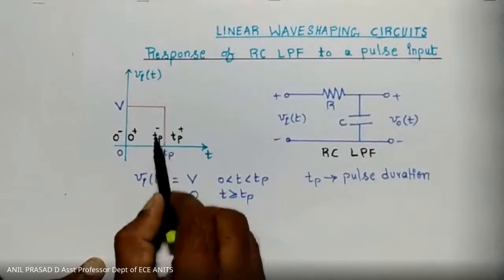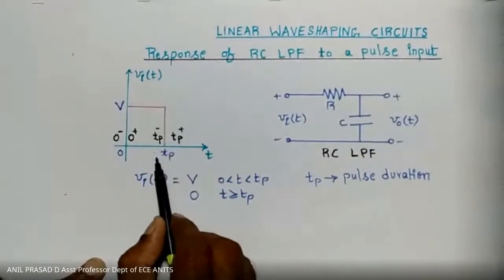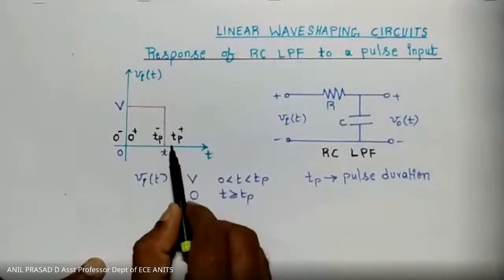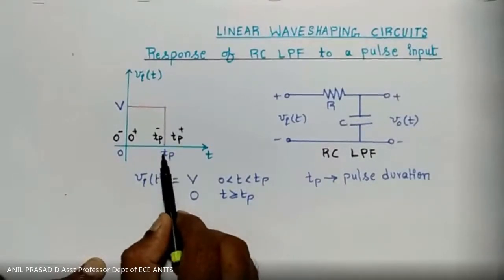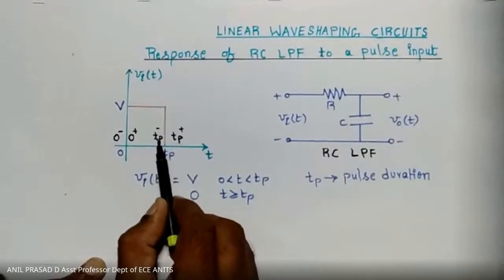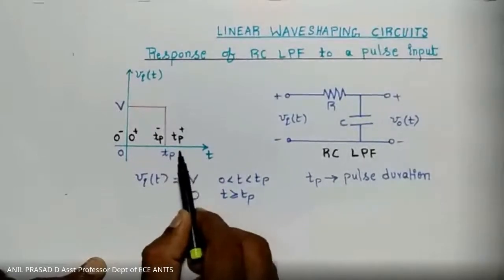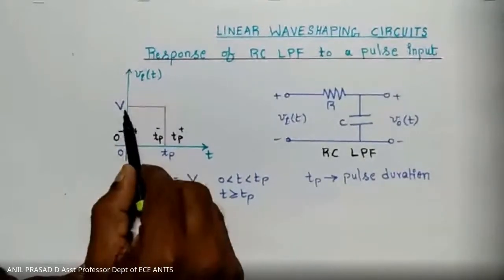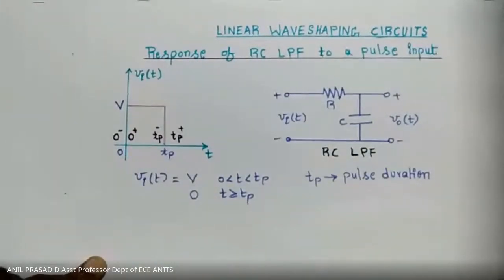tp minus means just before tp — at that point the input is still capital V volts. At t equal to tp, the input changes from capital V to 0 volts. tp plus means just after tp, where the input has changed from V to 0.